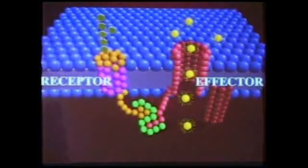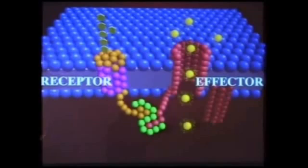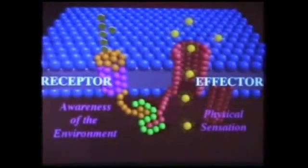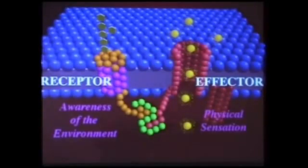This switch represents an important unit — the elemental unit of awareness. These two proteins together are required for a cell to respond to environmental stimulus. The receptor reads the primary signal — awareness of the environment. The effector sends a physical sensation into the cell. Together they form a unit that, by definition, is awareness of the environment through physical sensation — called perception. It's a molecular unit that transduces an environmental signal into behavior.